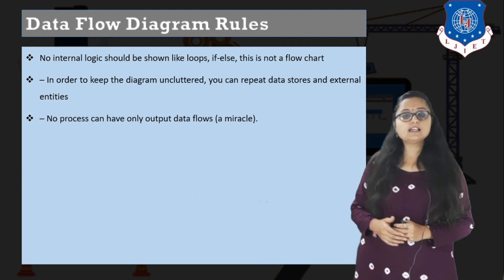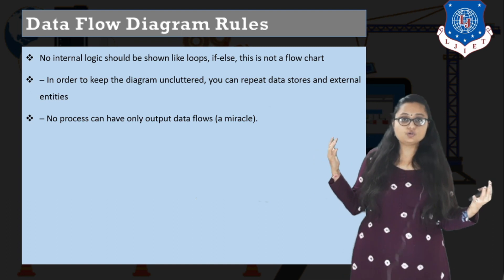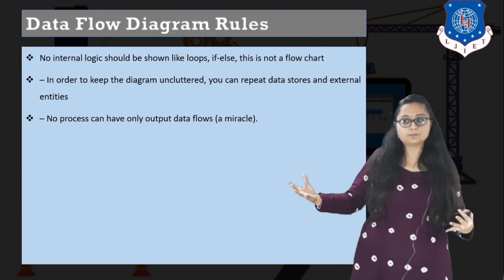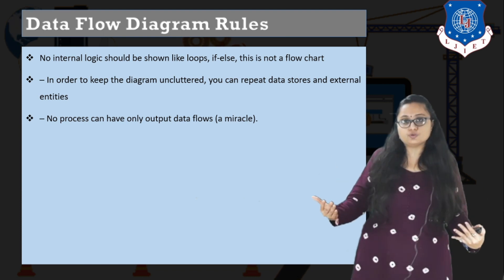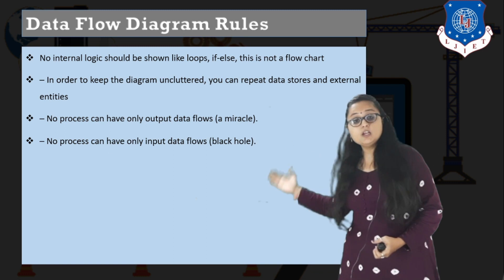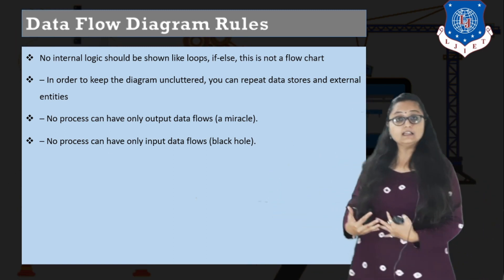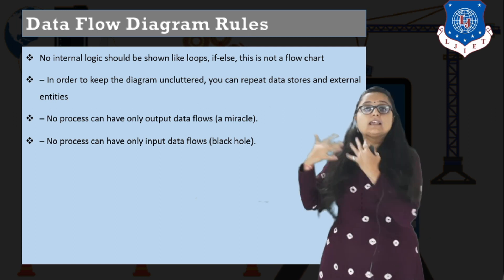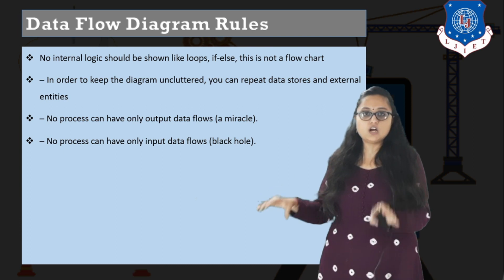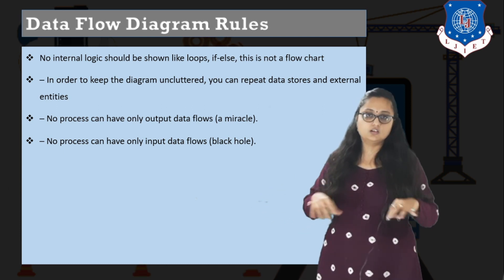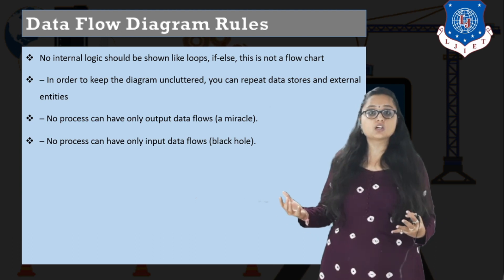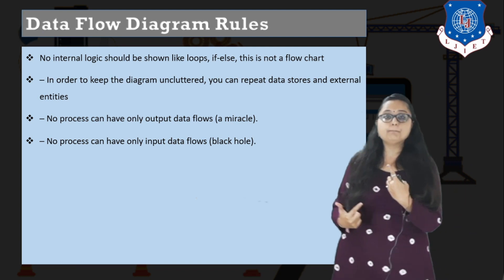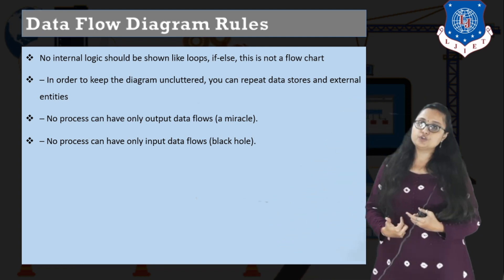No process can have only output data flow — that would be a miracle. If no data is being entered into the process, how can it manipulate data and give output? There should be some input for there to be an output. Similarly, no process can have only input data flow. If you enter information into a process, there must be an output — otherwise it is like a black hole. A process must contain minimum one input data flow and minimum one output data flow.